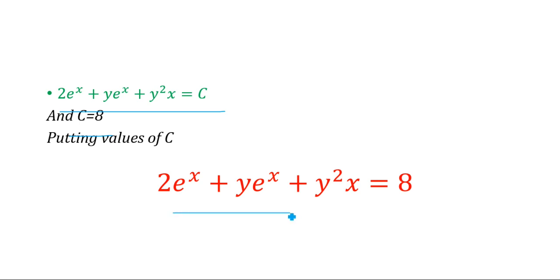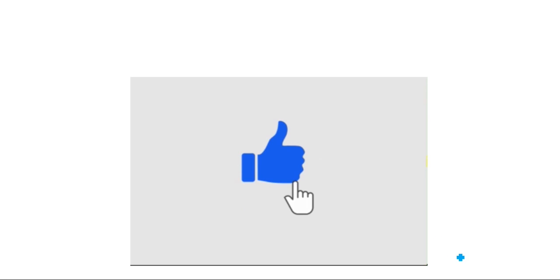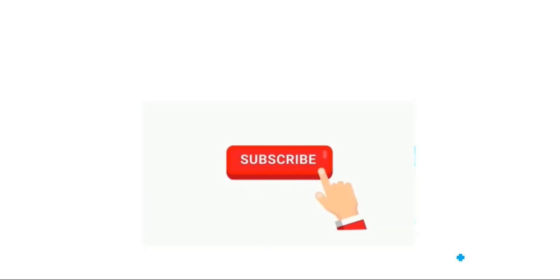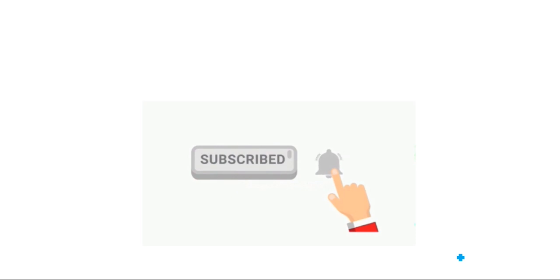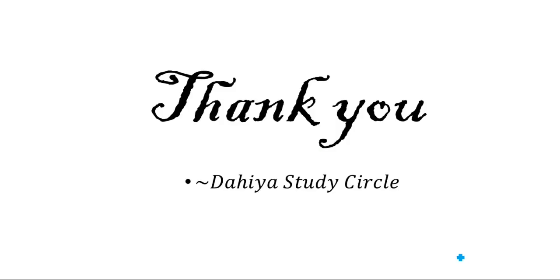That brings this video to an end. Next, we will be doing the integrating factor method, which is used when the equation is not exact. Until now, we have covered all cases where the equation is exact using both the basic method and the grouping method — use whichever you find easier. If you haven't seen the previous videos, go check those out. If you liked the video, please like, share, and comment to let us know what you'd like explained further. Please subscribe to the channel to keep us motivated. Thank you so much. Stay safe, stay home.